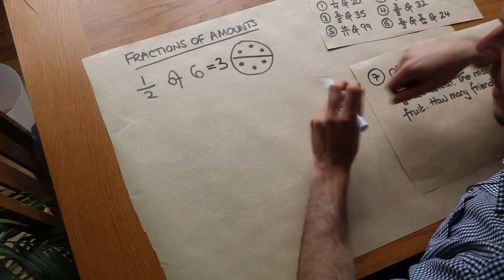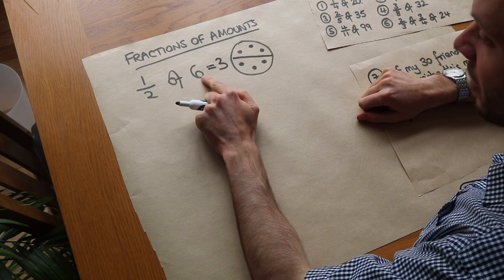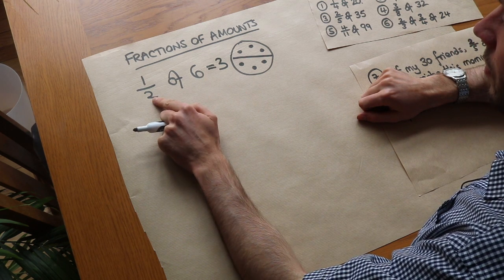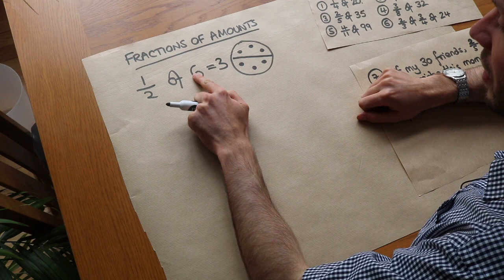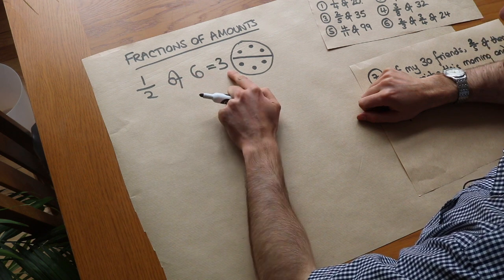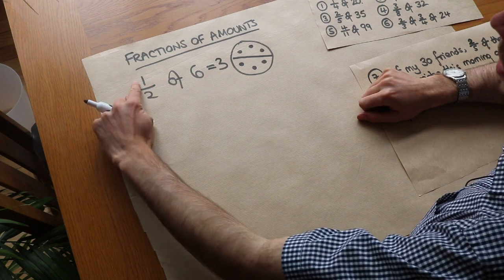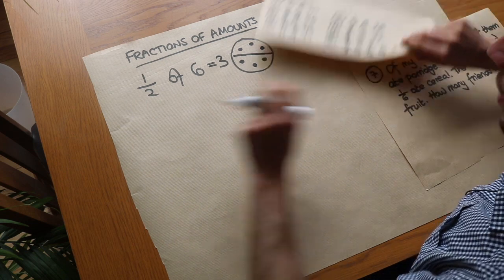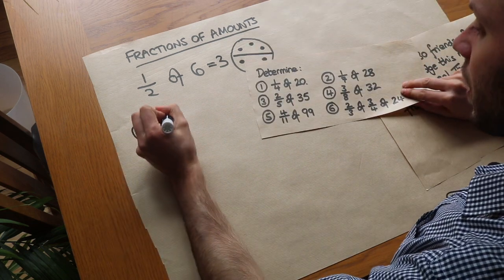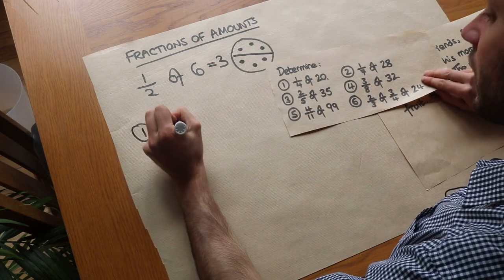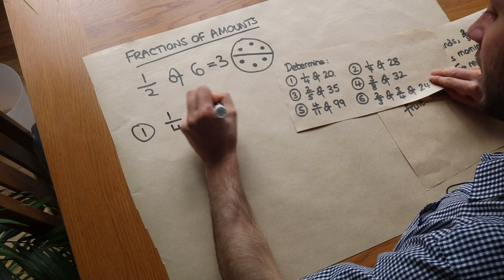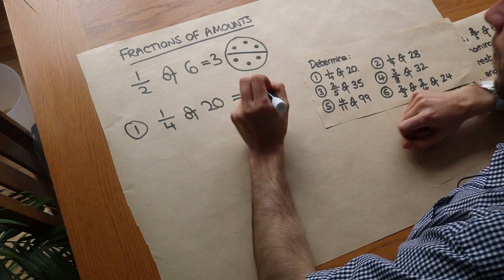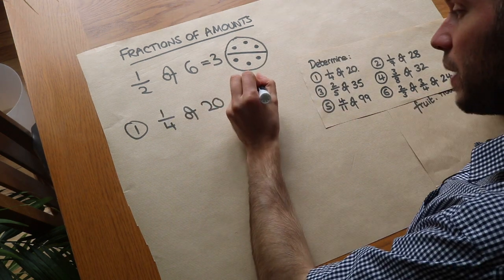The way we can do it is to divide the six by the denominator of the fraction. So we divide the six by the two and we get three. That only works if we have one at the top. So for these first examples, if I want to find a quarter of 20, I just need to do 20 divided by four, and that would be five.